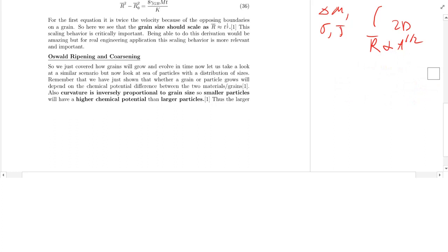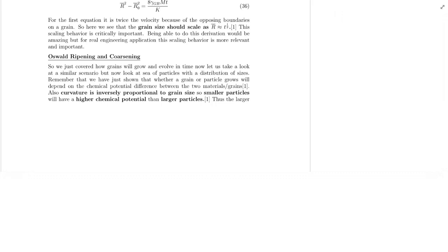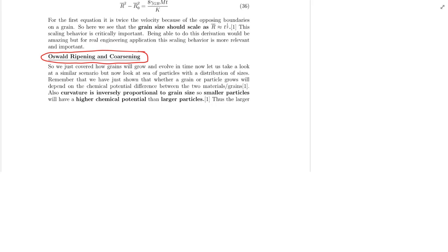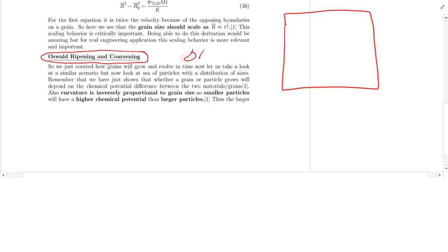We've dealt with 2D phenomena, and now we're going to move up in dimensionality into 3D — specifically with Oswald ripening and coarsening. Note that Oswald ripening is not named after Lee Harvey Oswald. We want to figure out how 3D spheres or particles precipitate from solution and how they will grow. This is still based on the change in chemical potential, which is related to curvature kappa, which for a sphere is 2 over R.